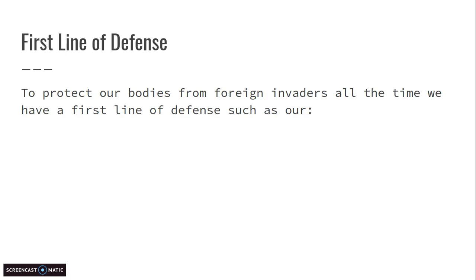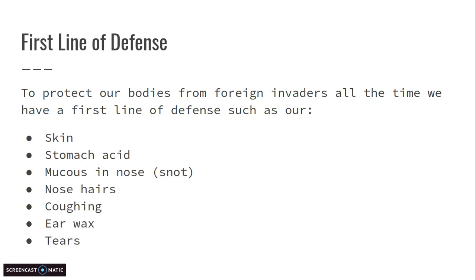So we're going to start with essentially the first line of defense. This is general information — you could write it on a separate piece of paper. Our body already has natural defenses that keep things out: skin, stomach acid, the mucus in our nose, nose hairs that tingle when something goes up our nose so we sneeze it out, coughing because of the little cilia lining our trachea, earwax that catches bacteria trying to enter that way, and tears that wash away stuff from our eyes.